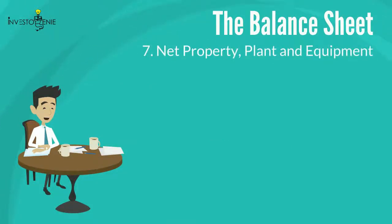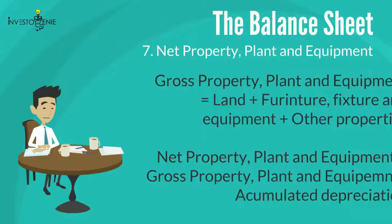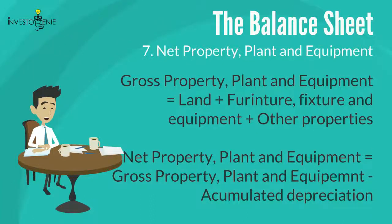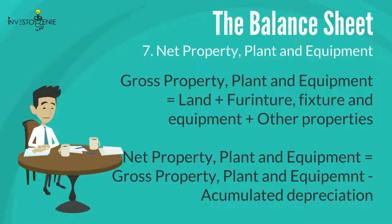Seven: net property, plant, and equipment. If we add the land, furniture, fixtures and equipment, and other properties, the sum gives us gross property, plant, and equipment. Deducting accumulated depreciation from this gives us net property, plant, and equipment.